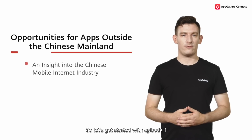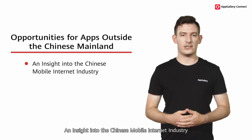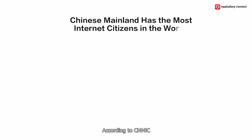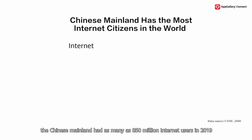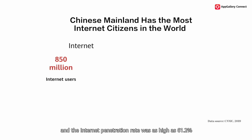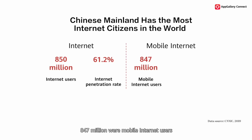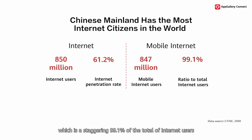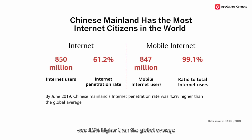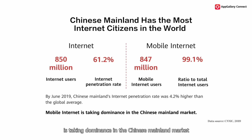Let's get started with episode one: an insight into the Chinese mobile internet industry. The Chinese mainland market is one of the largest in the world for mobile internet. According to CNNIC, the Chinese mainland had as many as 850 million internet users in 2019, and the internet penetration rate was as high as 61.2%. Among these 850 million users, 847 million were mobile internet users, which is a staggering 99.1% of the total. By June 2019, the Chinese mainland's internet penetration rate was 4.2% higher than the global average. We can see that mobile internet is taking dominance in the Chinese mainland market.